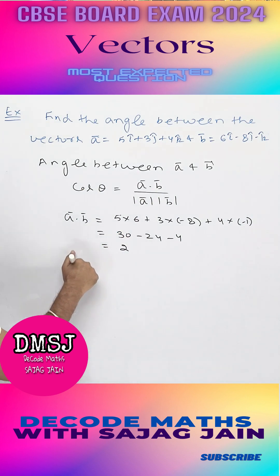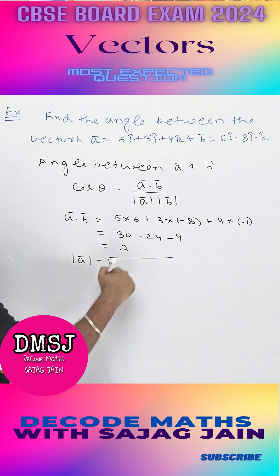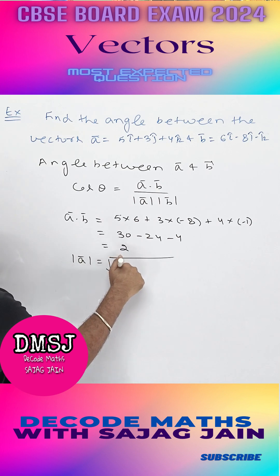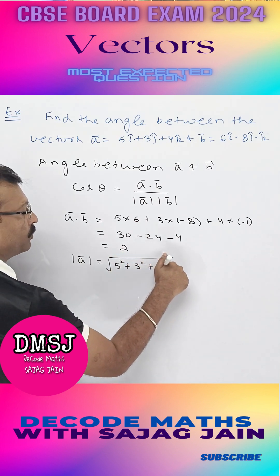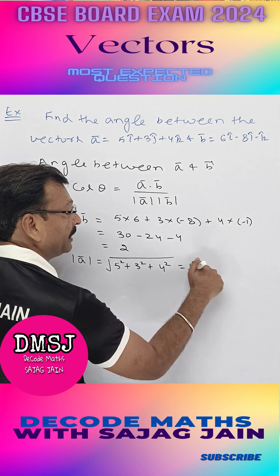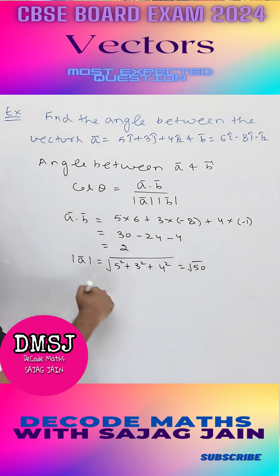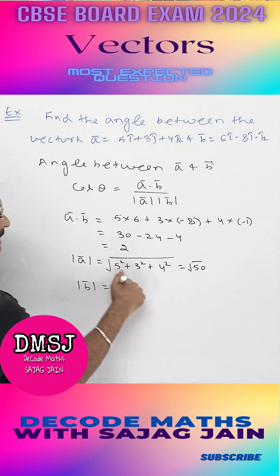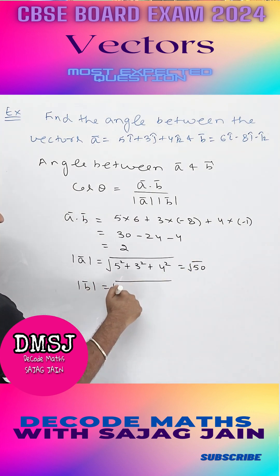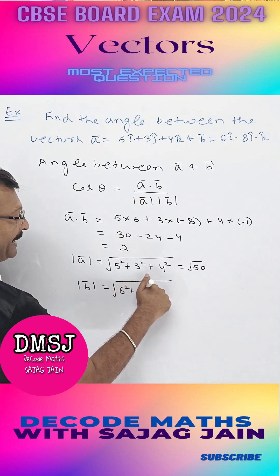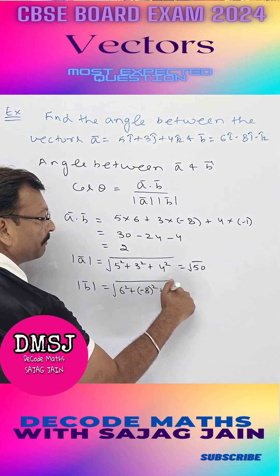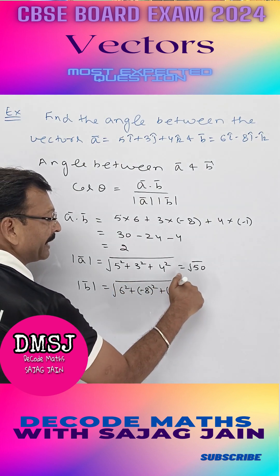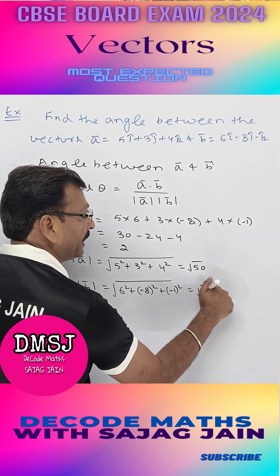Now modulus of a is under root of 5 square 25 plus 3 square 9 plus 4 square, under root of 50. Now modulus of b is under root of 6 square plus minus 8 square plus minus 1 square, under root of 101.